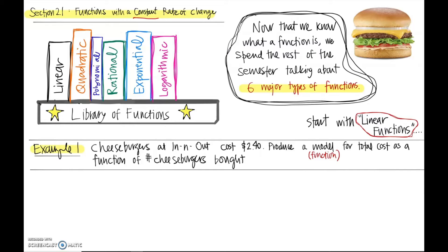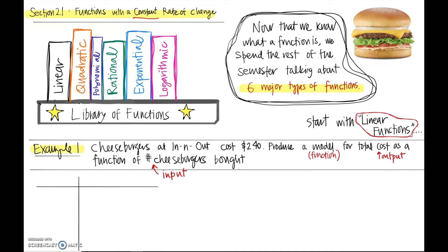This phrase 'as a function of' — we remember that the thing that comes before the phrase is the output. So total cost is our output, and the number of cheeseburgers bought is our input. I need to come up with a formula. My favorite way to do this is to produce a table to wrap my head around how this data is behaving, and then from the table I can usually tell what the formula should be.